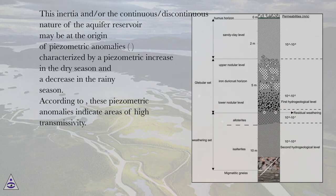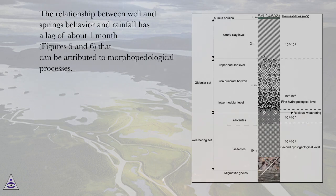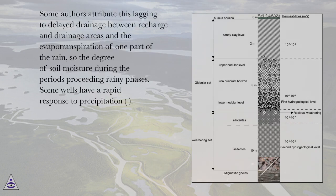These piezometric anomalies indicate areas of high transmissivity. The relationship between well and spring behavior and rainfall has a lag of about one month, as shown in figures 5 and 6, which can be attributed to morphopedological processes. Some authors attribute this lag to delayed drainage between recharge and drainage areas and to the evapotranspiration of part of the rain, and to the degree of soil moisture during the periods preceding rainy phases.